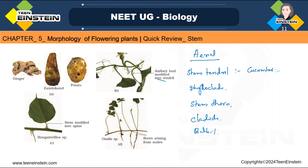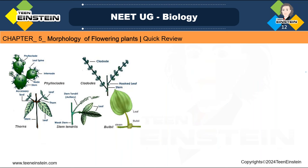You may get a question like: cucumber is the example for which type of modification? Stem tendril — aerial stem modification. For stem tendril, you should learn known plant examples so you can identify the exact feature. Cucumber and Passiflora are the examples for stem tendril.